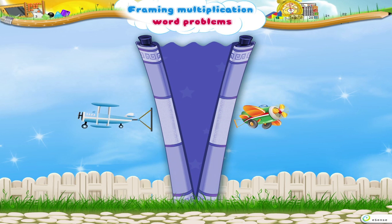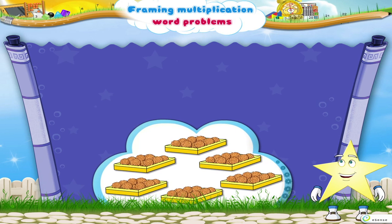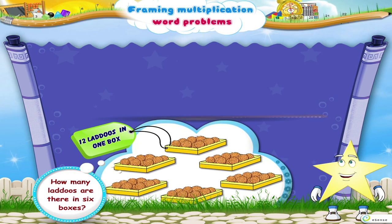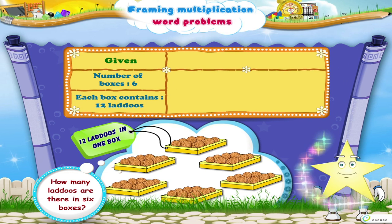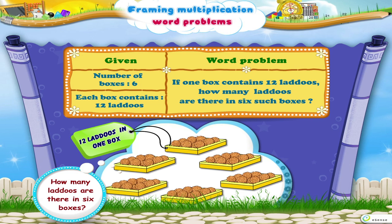Let us see if you have understood what we have just learned. With this information, form the word problem. Here are 6 boxes. There are 12 ladoos in one box. The word problem is: one box contains 12 ladoos. How many ladoos are there in 6 boxes?